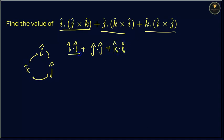If I write i dot i, that means you are getting the value as one. This one you will get the value as one, and this one you will get the value as one.